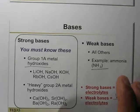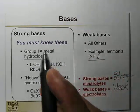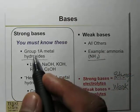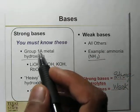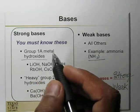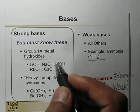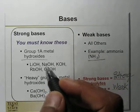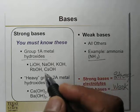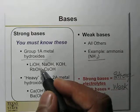Bases are also categorized as strong or weak. Strong bases are Group 1A metal hydroxides: sodium hydroxide, lithium hydroxide, potassium hydroxide, rubidium hydroxide, and cesium hydroxide.